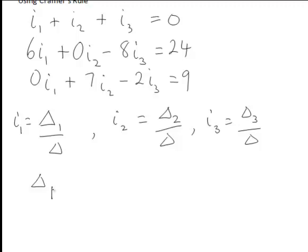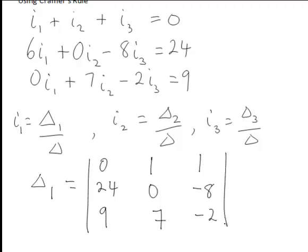Finding delta1, this determinant relates to the unknown i1 in the first column so our constants 0, 24 and 9 go into the first column. Then the coefficients of i2 and i3 once again go into the second and third columns respectively. That delta1 determinant works out to be 144.